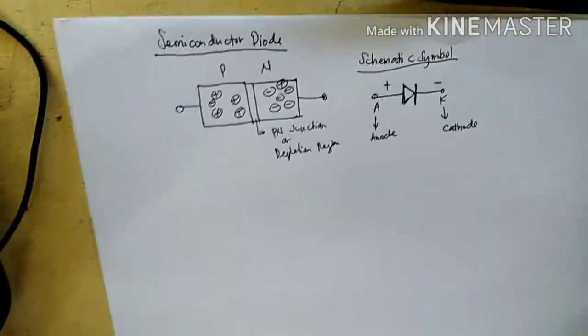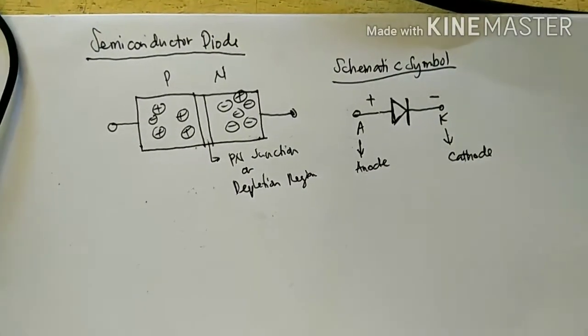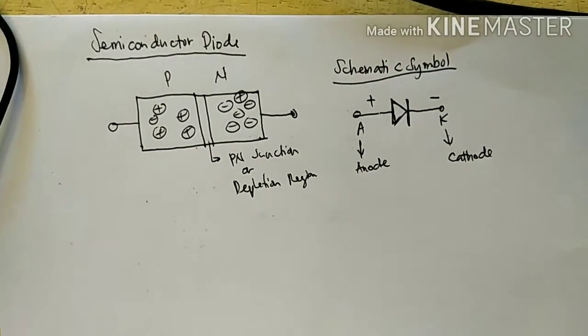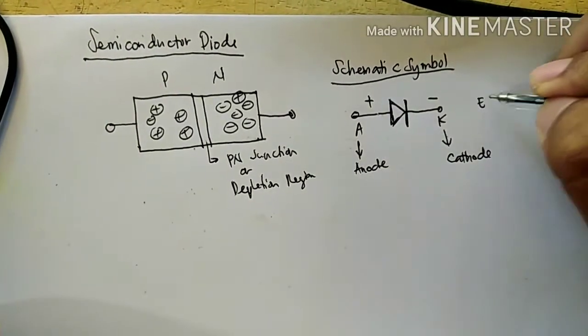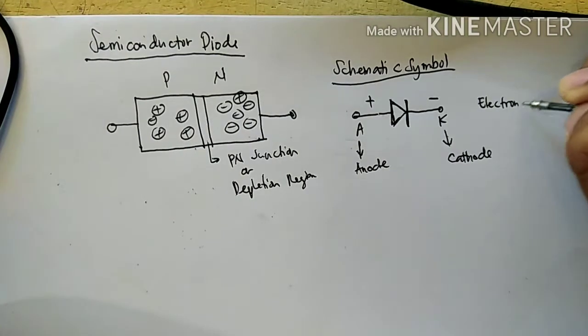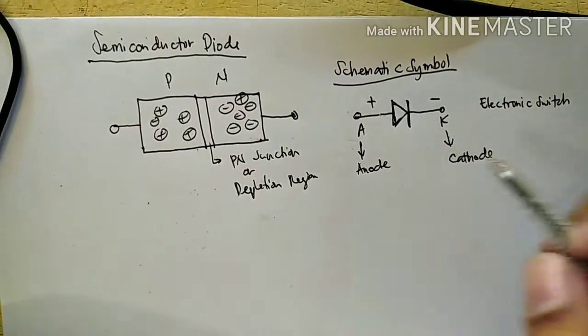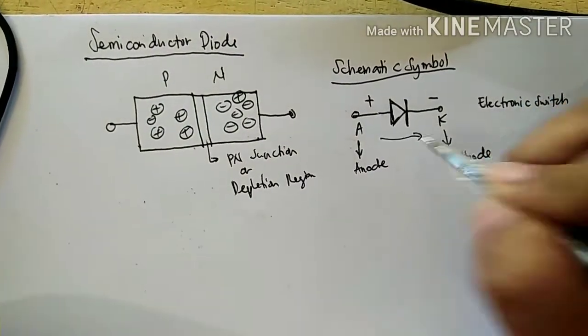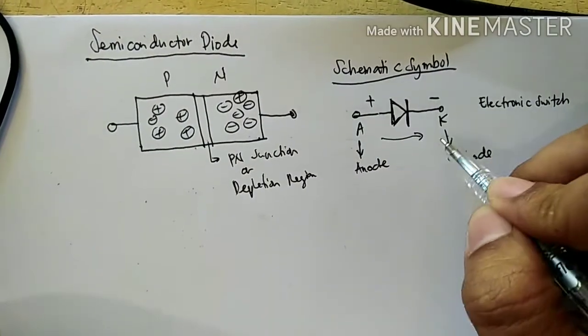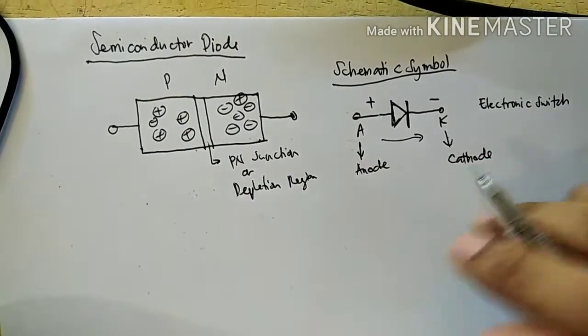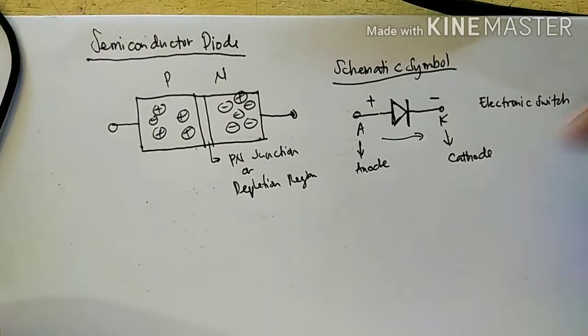In electronics, semiconductor diode is an important tool. It acts as an electronic switch since it flows only in one direction. It will allow current to flow this direction but not on the other side. So this is considered as a unidirectional device.